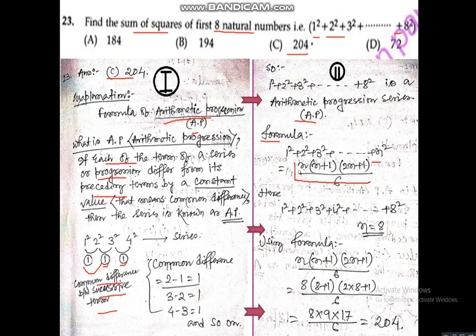Using the formula n(n+1)(2n+1)/6 with n = 8: we get 8 × 9 × 17 divided by 6, which gives us 204. So the correct answer is option C, 204.